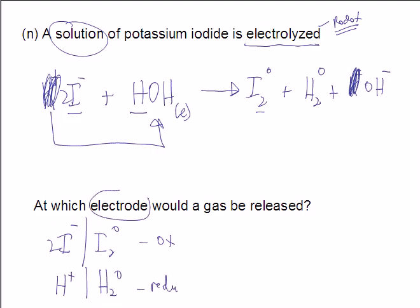Okay, they want to know which electrode this happened on. We have two choices. We have the anode, and we have the cathode. Anode oxidation, cathode reduction. So they want to know which one the gas would be released.